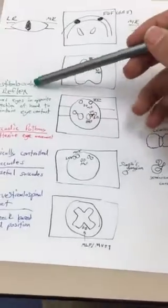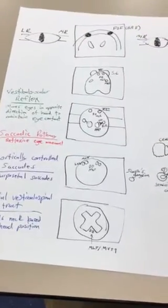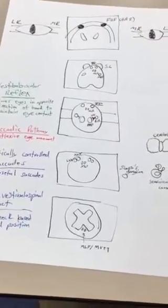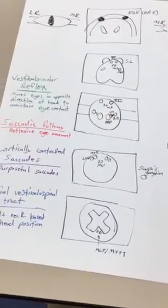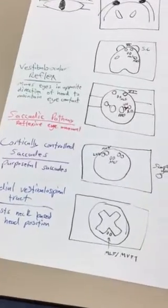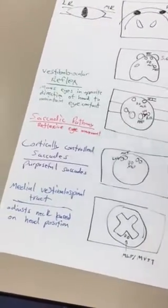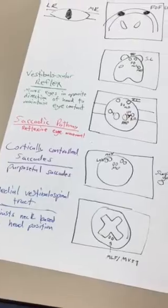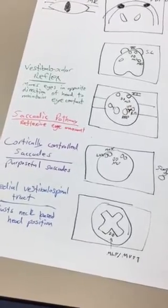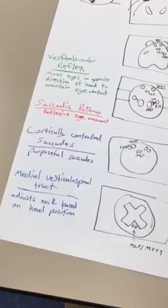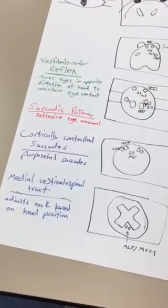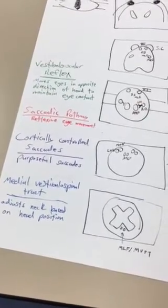So just so you know, we'll be talking about vestibulo-ocular reflex, which is moving your eyes in the opposite direction of your head. This allows you to turn your head and still keep your eyes on a focused target. We'll talk about the saccadic pathway, which is reflexive eye movement, as well as cortically controlled saccades, which is purposeful eye movement. And then we're also going to retouch on the medial vestibulo-spinal tract, which we talked about previously, which has to do with neck and head-based positioning.